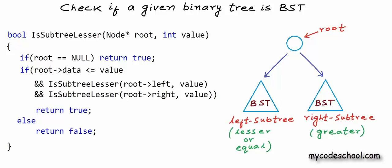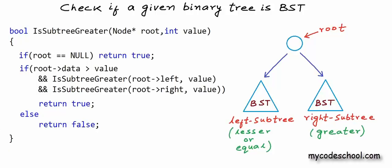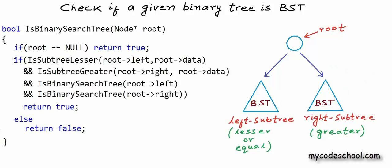Instead of writing isSubtreeLesser and isSubtreeGreater, we could also find the maximum in the left subtree and compare it with the data in root — if the maximum is lesser, all elements are lesser. Similarly, if the minimum of the right subtree is greater, all elements are greater. So we could write findMax and findMin functions instead, and this would also work. That is our solution using the first approach.